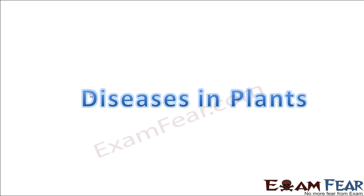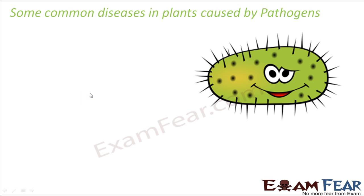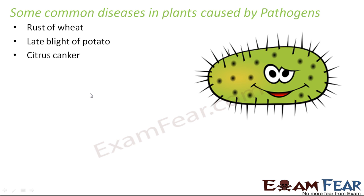Let us look at the diseases which are caused in plants by pathogens. Some common diseases in plants caused by pathogens are: rust of wheat, late blight of potato, citrus canker, and powdery mildew. The names of these diseases are quite fancy and have been named after some of the symptoms which occur in that particular disease.